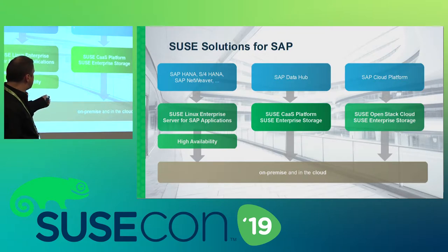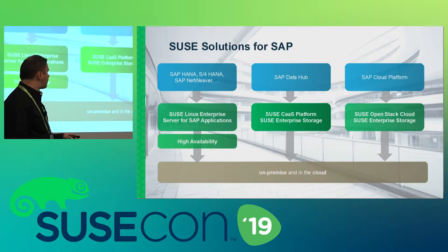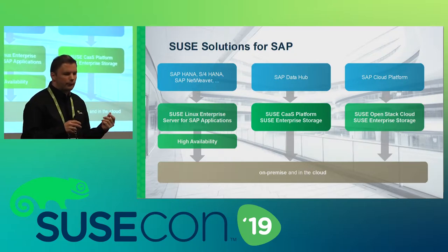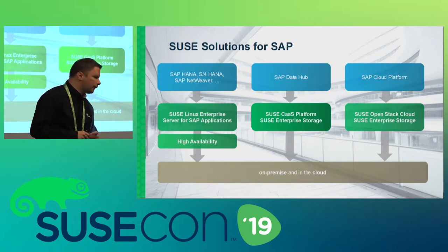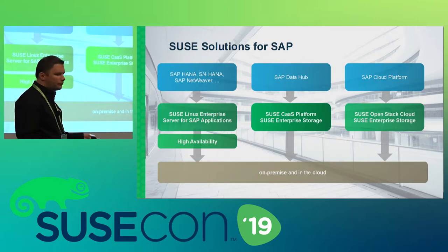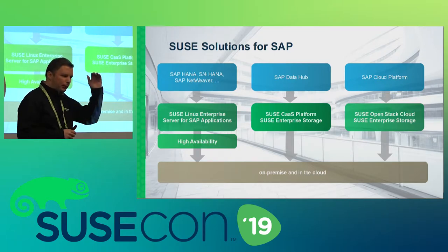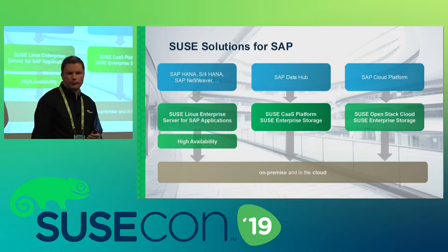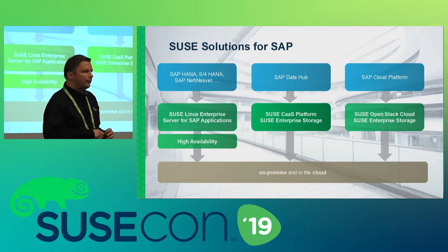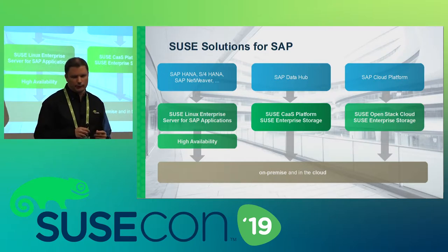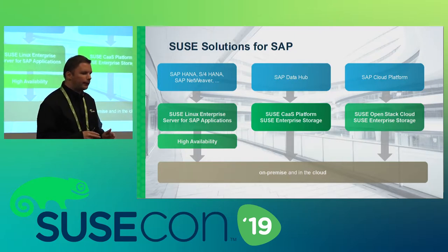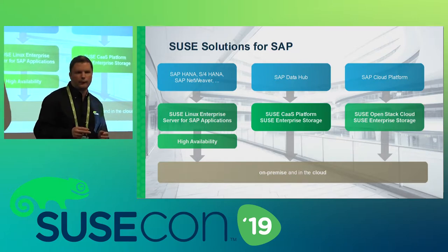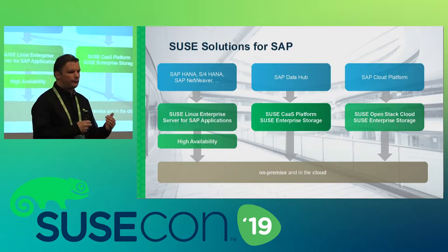The middle pillar is the latest addition: SAP Data Hub, which runs on the CASP platform and SUSE Enterprise Storage. The right pillar is the SAP Cloud Platform — SAP's platform-as-a-service offering, a hosted cloud maintained by SAP. This also needs an infrastructure-as-a-service layer, which runs on SUSE technology — specifically SUSE OpenStack Cloud and SUSE Enterprise Storage. There's a very tight engineering collaboration between SAP and SUSE here, with engineering teams working under the same project management.